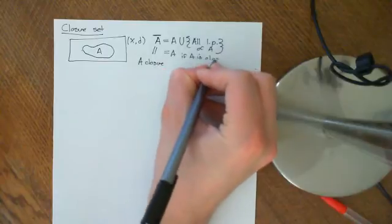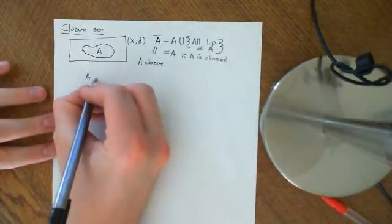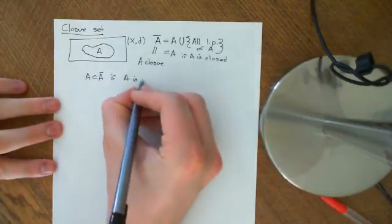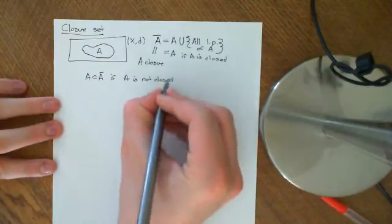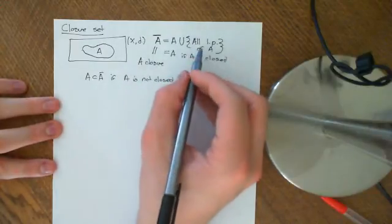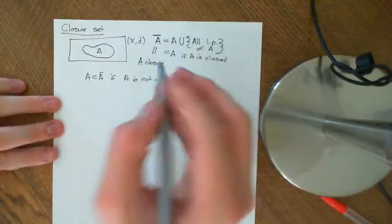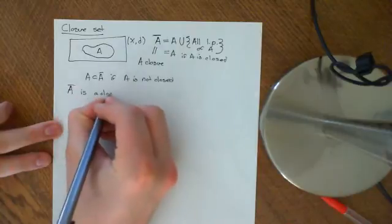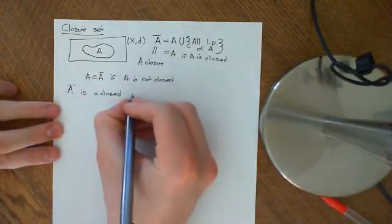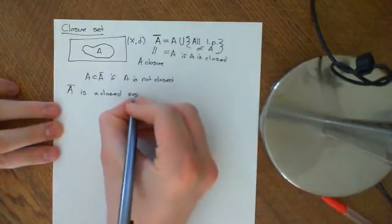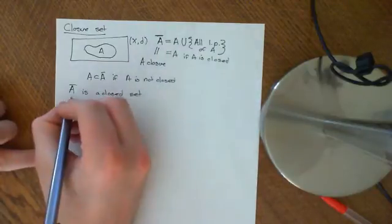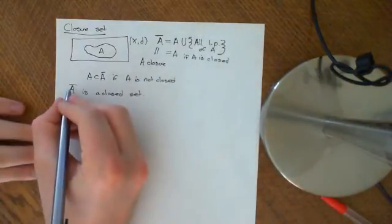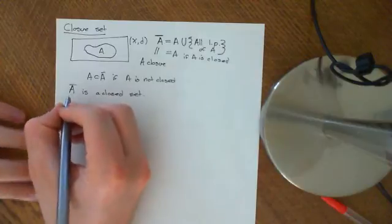But A closure will be bigger than A — i.e., A will be strictly contained within A closure — if A is not closed. Because if it's not closed, it won't contain all its limit points, and when we union on the set of all limit points, we add in some new points. So let's prove A closure is a closed set. We're going to use the result that a set is closed if and only if it contains all its limit points, and show that A closure contains all its limit points.